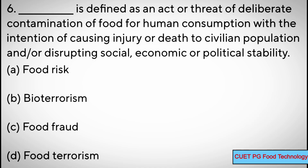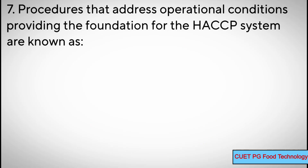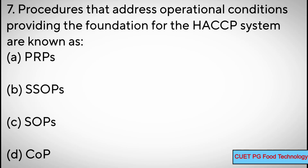Question number seven: procedures that address operational conditions providing the foundation for the HACCP system are known as — options: A) PRPs, B) SSOPs, C) SOPs, D) COP. Correct answer: A) PRPs — pre-requisite programs.